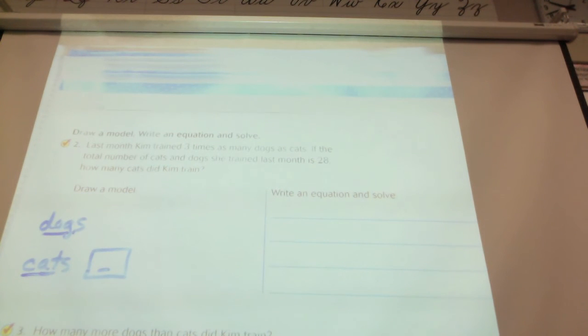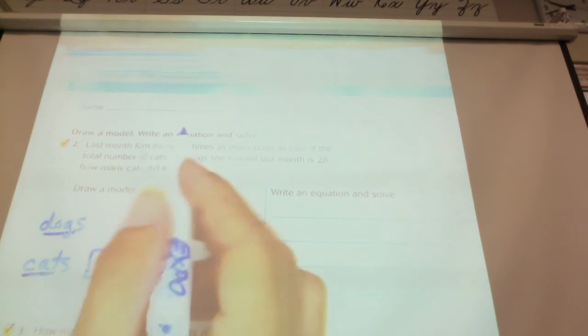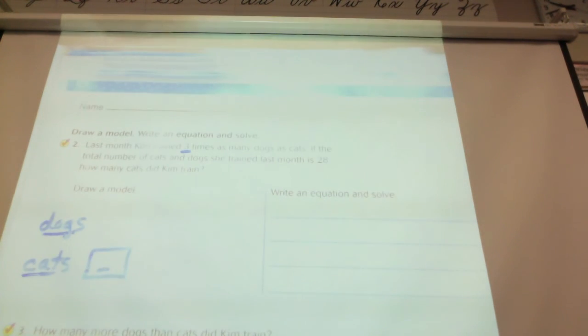And we're going to represent cats with one box. And I want you, if you're ready, to look back at the problem and decide how many boxes are going to represent how many dogs we have. Three boxes, it says right here. Three times as many dogs. So I'm going to put three boxes, and then I have a total.